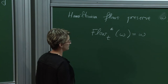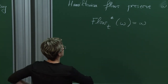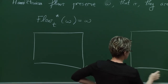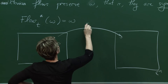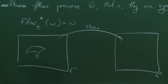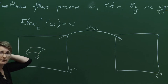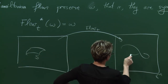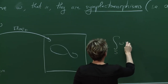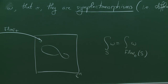It is more enlightening to write this in integral form. Given two copies of C^n and the Hamiltonian flow at time t mapping one to another, if you take a two-dimensional surface S and flow every point according to the Hamiltonian flow, you recover another surface. The relation is: the integral of ω over S equals the integral of ω over the image of S under the Hamiltonian flow.